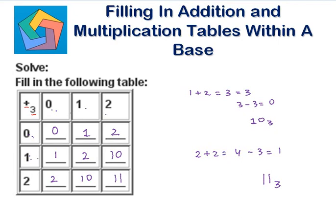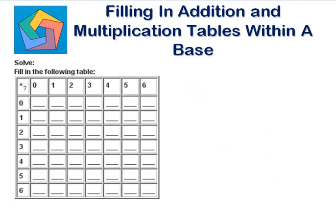Let's look at the next problem. Fill in the following table. This is a multiplication table with respect to base 7. 0 times 0 is 0. Anything multiplied with 0 is 0, so this entire first row is 0, and the first column is 0 also.